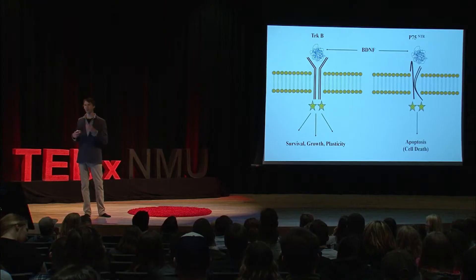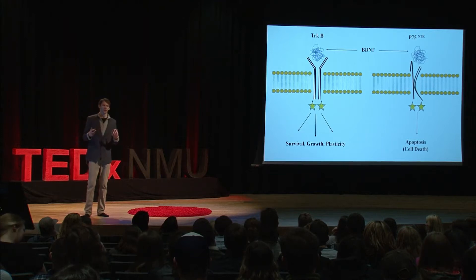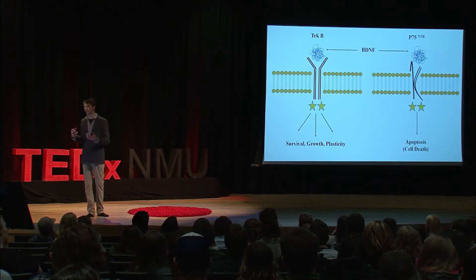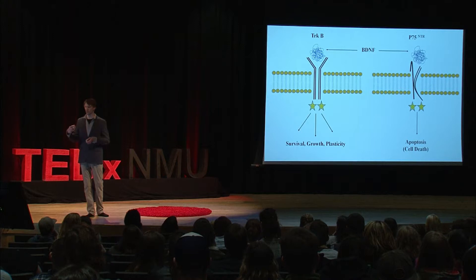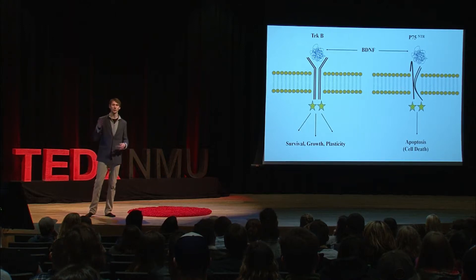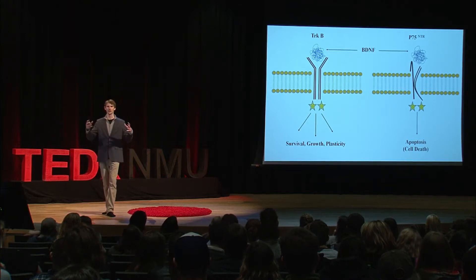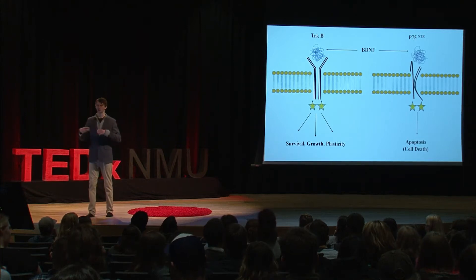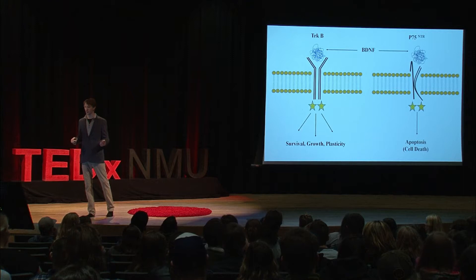Interestingly, the TrkB receptor is involved in the survival of developmental neurons. For instance, as neurons are migrating, the ones that reach their innervation points first will receive TrkB activation from BDNF, and they will survive. You can see how binding to these different receptors leads to very different effects on the nervous system.